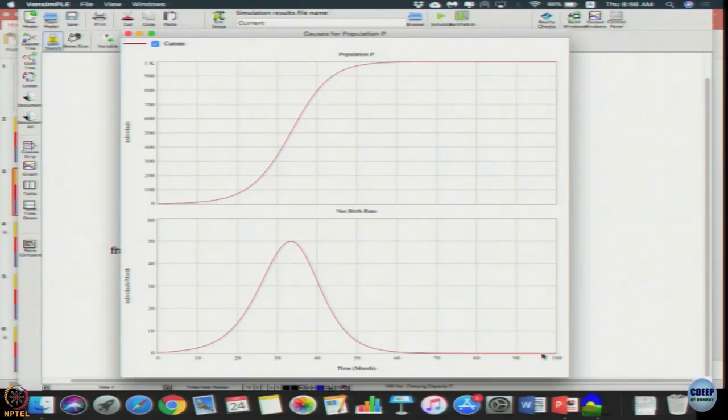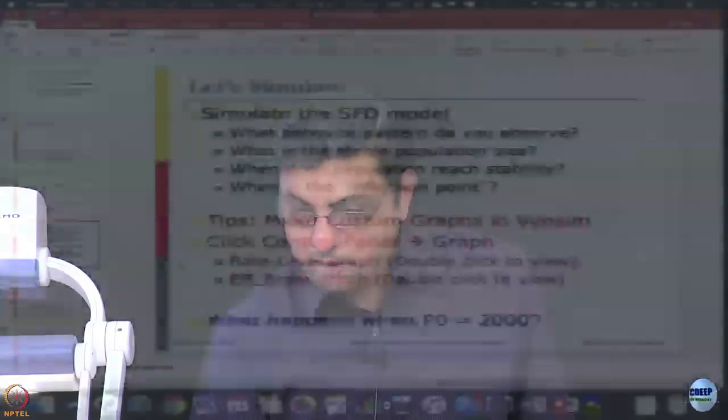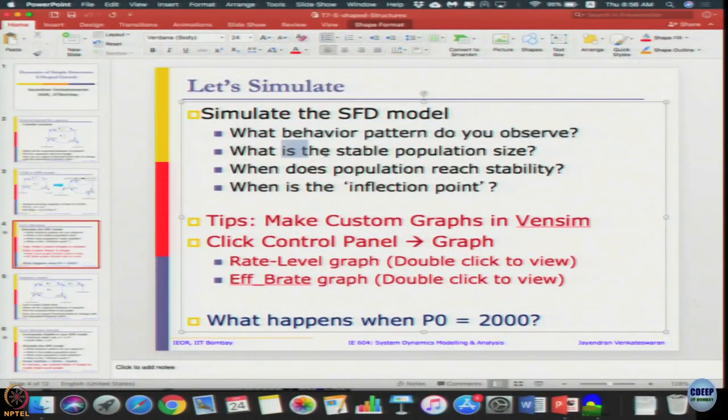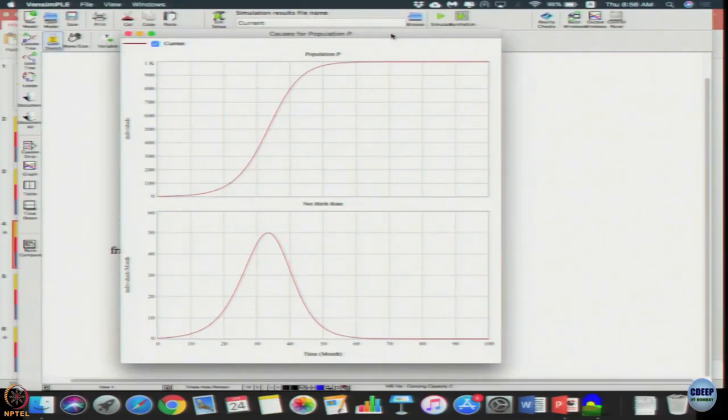Observe this - some questions I've written: pattern we observed is S-shape, stable population size is 1000. When does population reach stability and when is the inflection point? We can see it from here. When does the population reach stability? About 70 weeks, I guess 70 to 80 weeks. Or if you want to discount all the small fractions, then around maybe 65 months rather, it reaches stability.